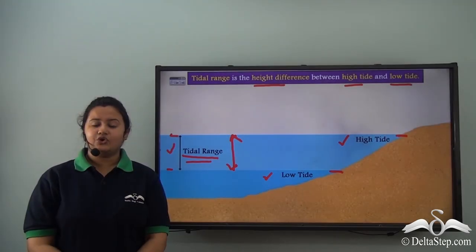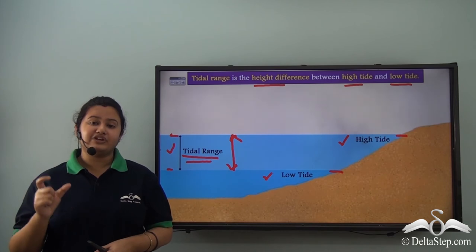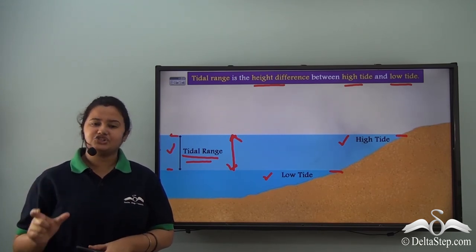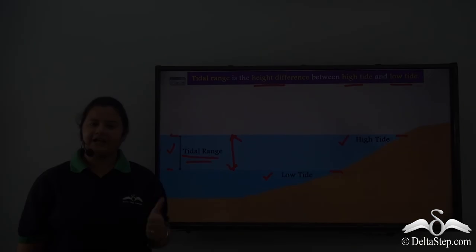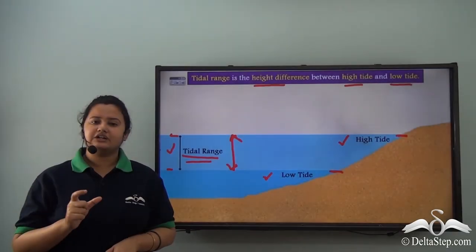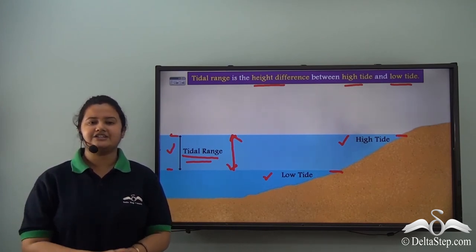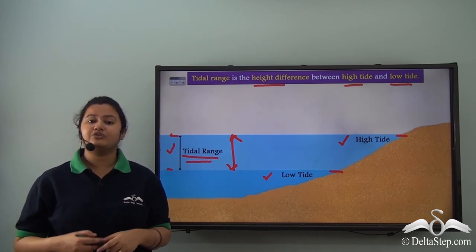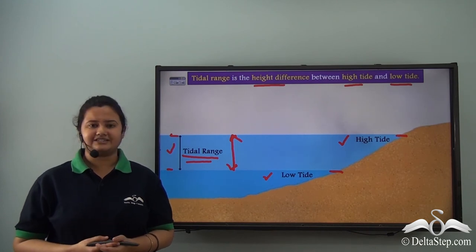In this video, we understood what tides are and the causes that lead to their formation. The main reason for the formation of tides is the moon's gravitational pull. We learnt about two types of tides — high tide and low tide — and that the difference between the height of a high tide and a low tide is called the tidal range. In the next video, we will learn about spring tide and neap tide, and the importance of tides.